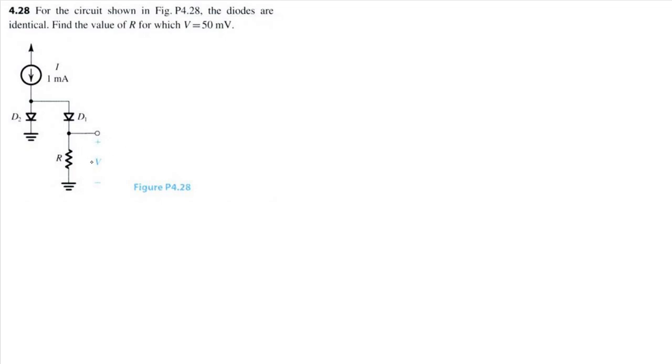We see that V is just the voltage across this resistor, and we know that these two diodes are identical. Let's start by labeling the current traveling from this diode to be ID1, and this current ID2. We see that we have the source current I of 1 milliamp.